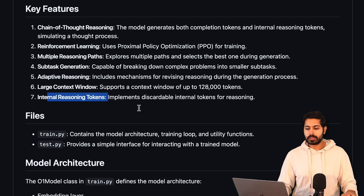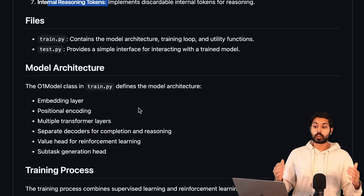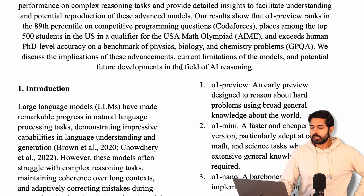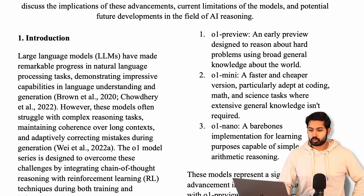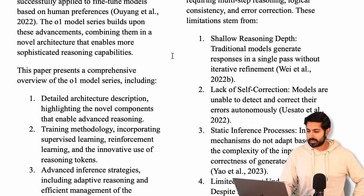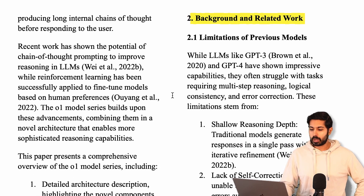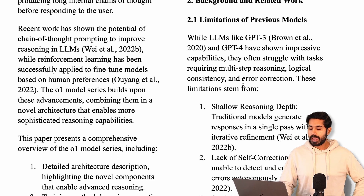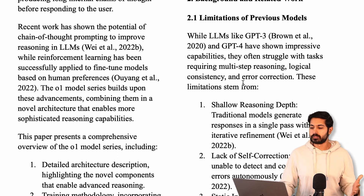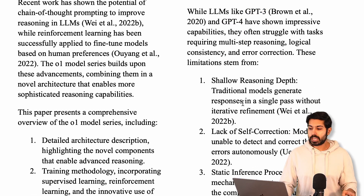The first step in this video is to go through the research paper, and then we're going to go through the code. This paper is 20 pages long, so it's quite long. We're going to start with the background, because I think the background is the most important part — it shows the limitations of previous models like GPT-3 and GPT-4, including shallow reasoning depth.